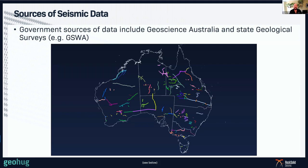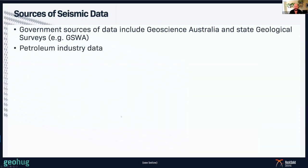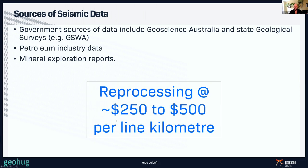What about sources of seismic data? Government sources include Geoscience Australia and State Geological Surveys. The Geoscience Australia datasets cover most of Australia, and the GSWA datasets are also freely available — so we've got pretty good data sets available without having to spend any money. There are also petroleum industry datasets and mineral exploration reports available, though those are of lesser value. Quite often you'll need to reprocess the Geoscience Australia and State Geological datasets as they were processed for different objectives. Reprocessing costs about $250–$500 per line kilometre depending on length, so it's not that expensive.